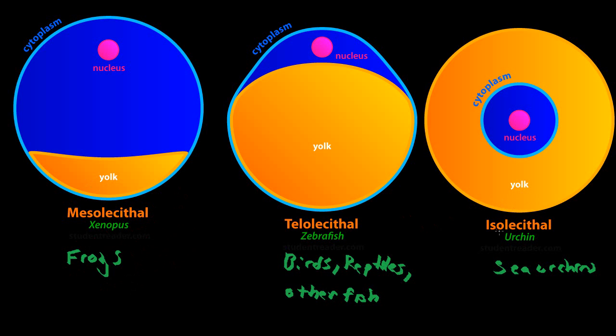The quantity of yolk in an egg usually states something about the organism's development time. Generally, it just means that the organism needs a longer development time in order to become what it is. And these are the basic characteristics of the three types of eggs.